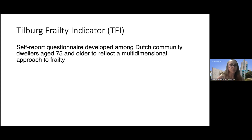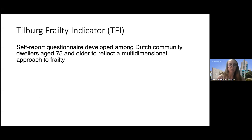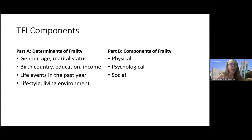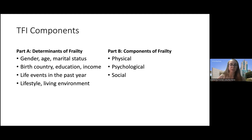The Tilburg Frailty Indicator is a self-report questionnaire developed among Dutch community dwellers age 75 and older to reflect a multidimensional approach to frailty. Part A includes demographics: gender, age, marital status, birth country, education, income, life events, lifestyle, and living environment. Part B — more commonly used to measure or quantify frailty — includes sections on physical, psychological, and social frailty, really mirroring that model presented by Dr. Young-Karis.